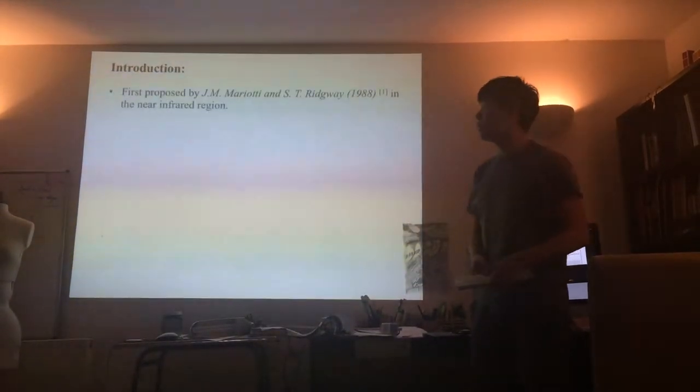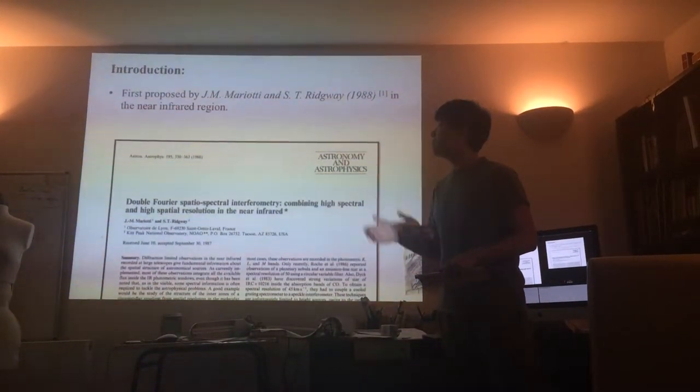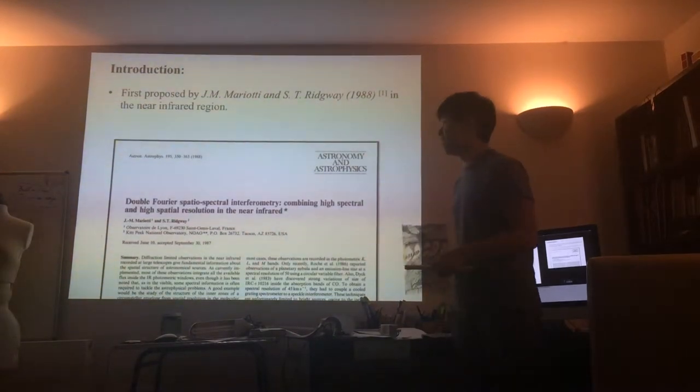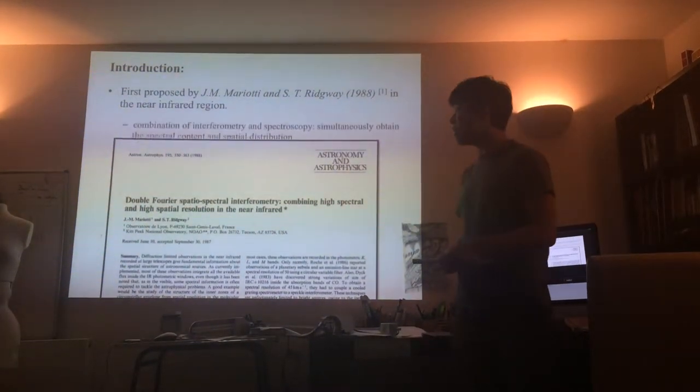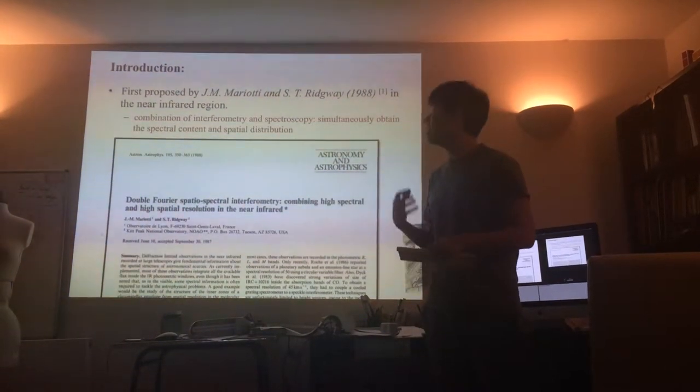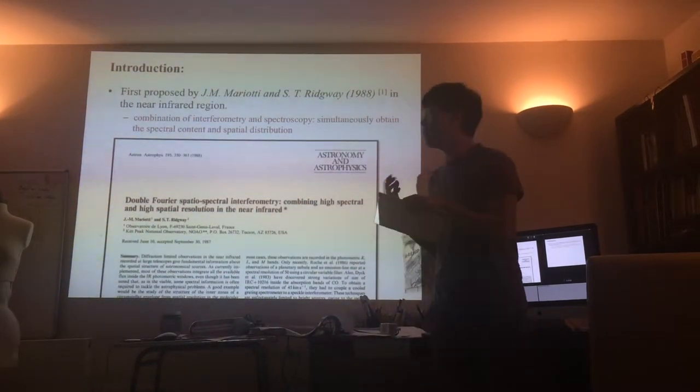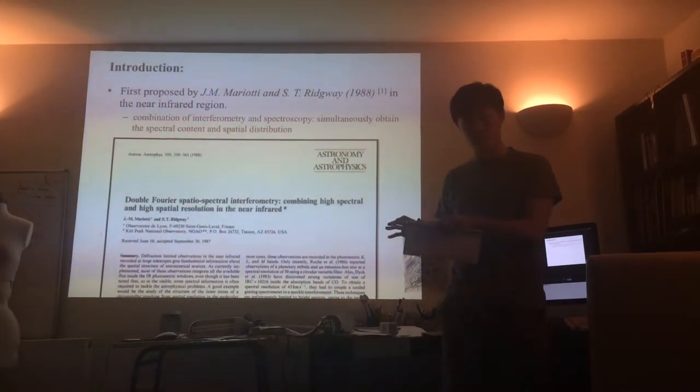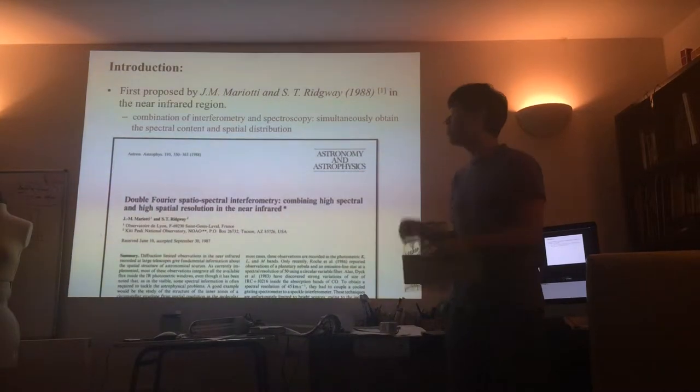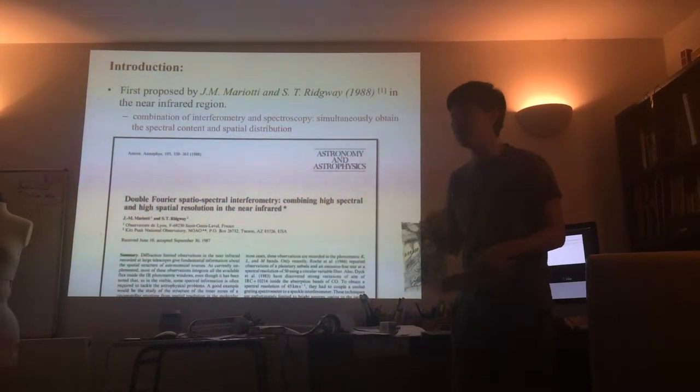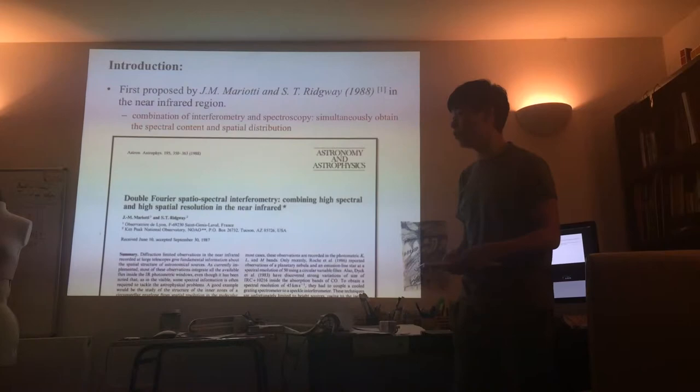So what is double-Fourier modulation? It was a technique first proposed by J.M. Mariotti and S.T. Ridgway in 1988. To summarize their paper, they discovered a way of combining interferometry and spectroscopy to simultaneously detect the spectral content and the spatial distribution of a source.